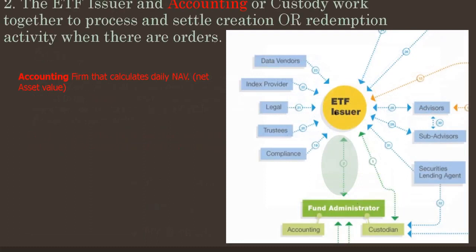Then in step two, the ETF issuer and accounting or custody work together to process and settle creation or redemption activity when there are orders. Whenever there are orders, creation and settlement is done between these two entities — the fund administrator and the ETF issuer.